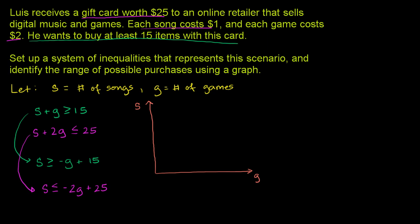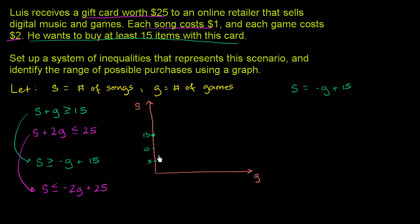Now we can graph these. The boundary line for the first constraint is s equals negative g plus 15. If he buys no games, he will buy 15 songs — so the s-intercept is 15. If he buys no songs, then 0 equals negative g plus 15, meaning g equals 15. So if he buys no songs, he'd have to buy 15 games. We're including the boundary line since it's greater than or equal to, so I'll draw a solid line.